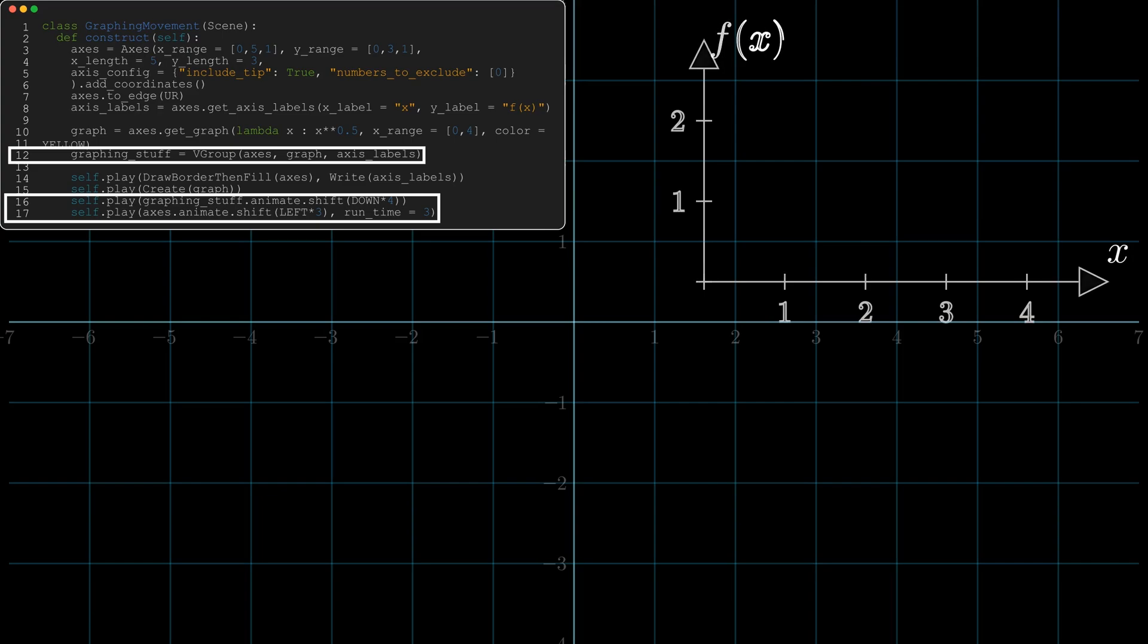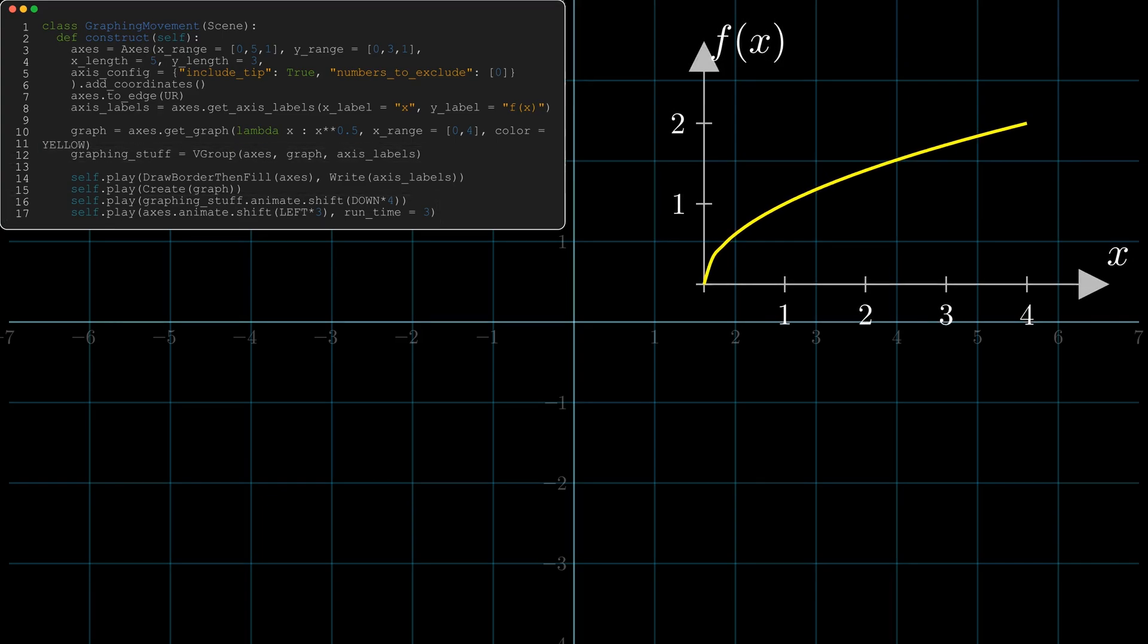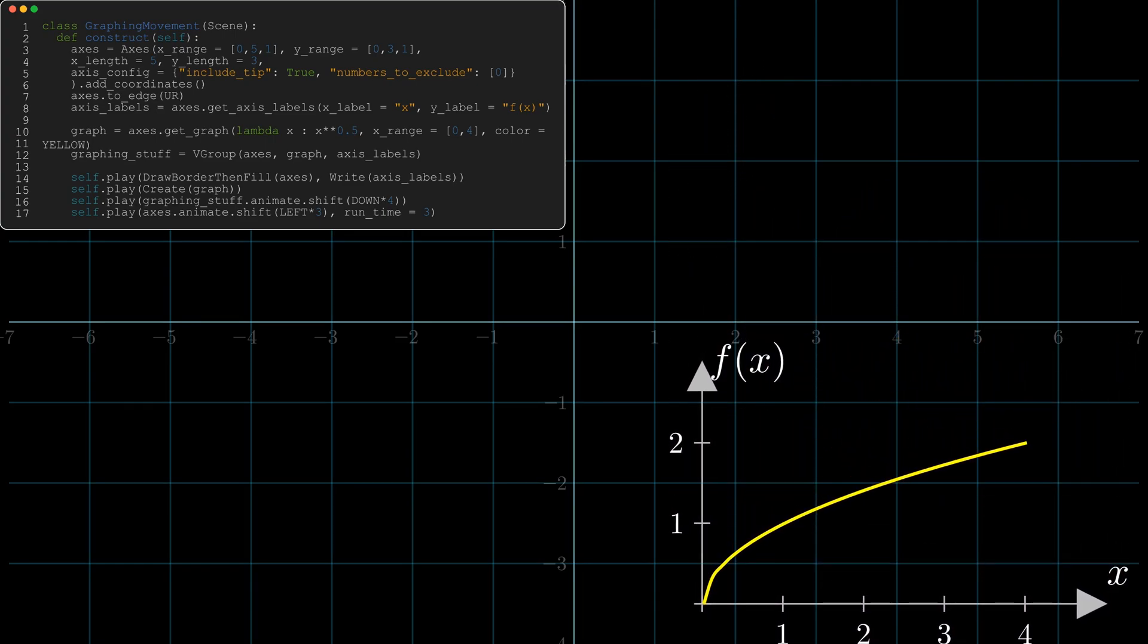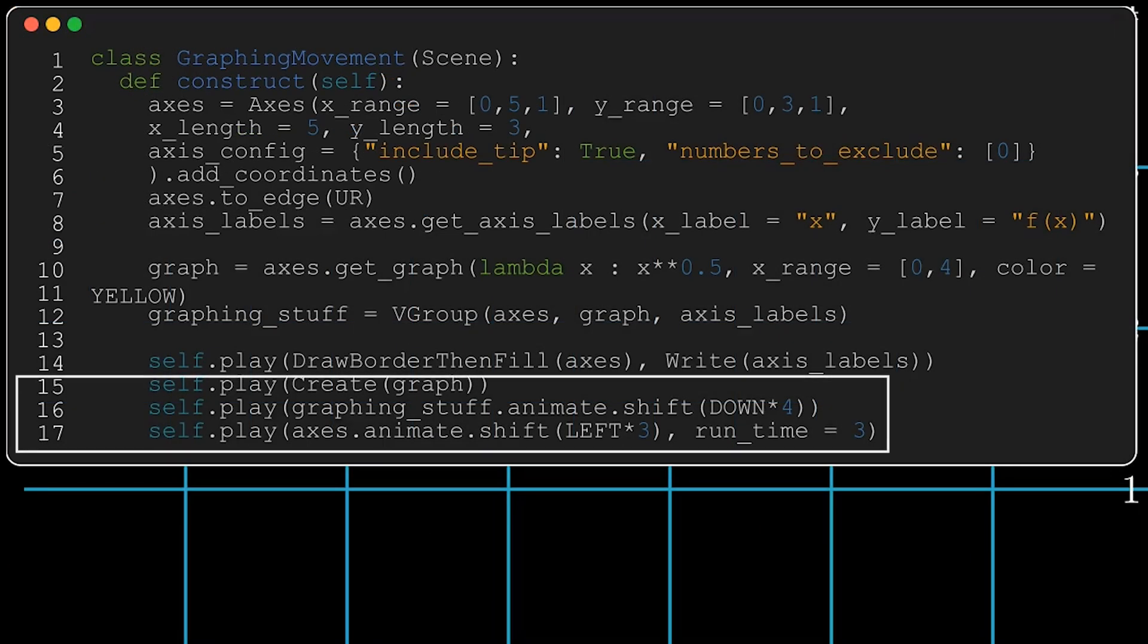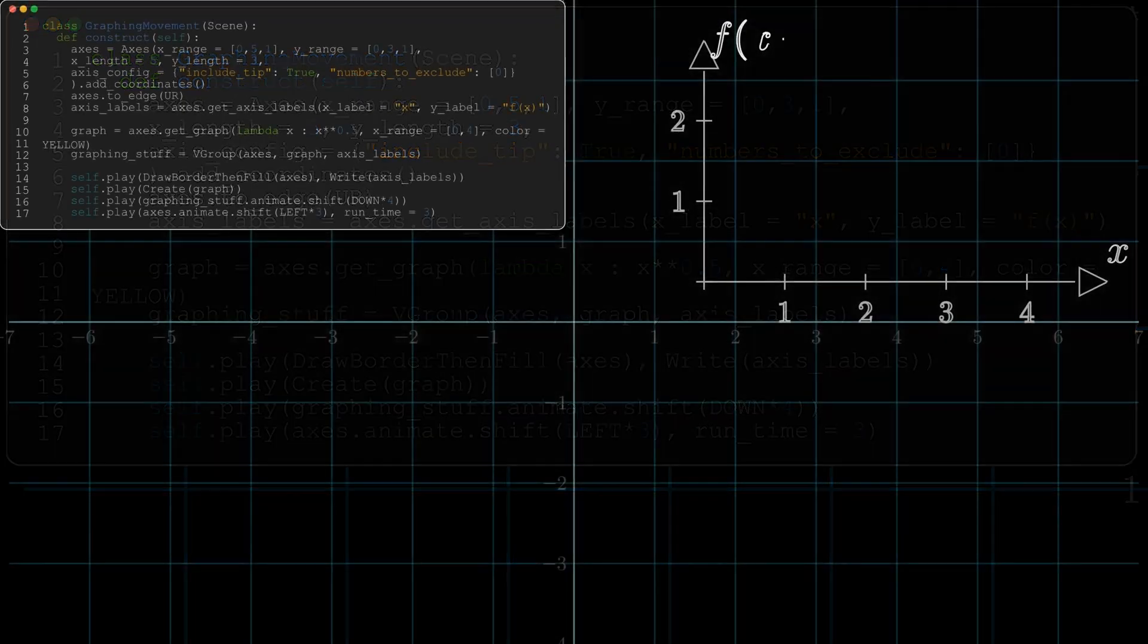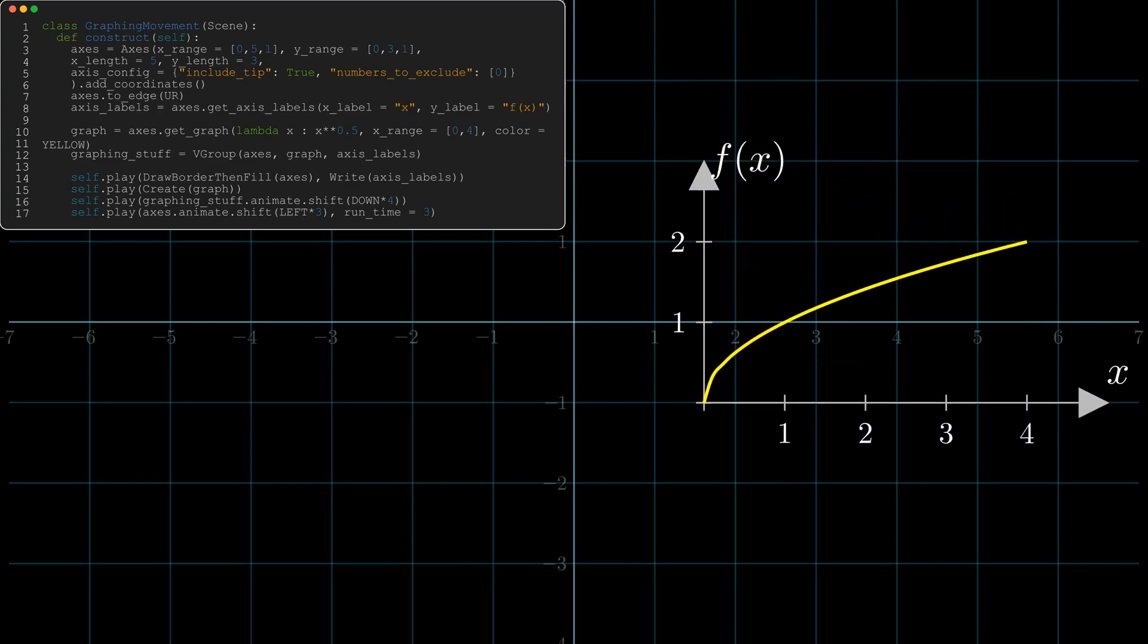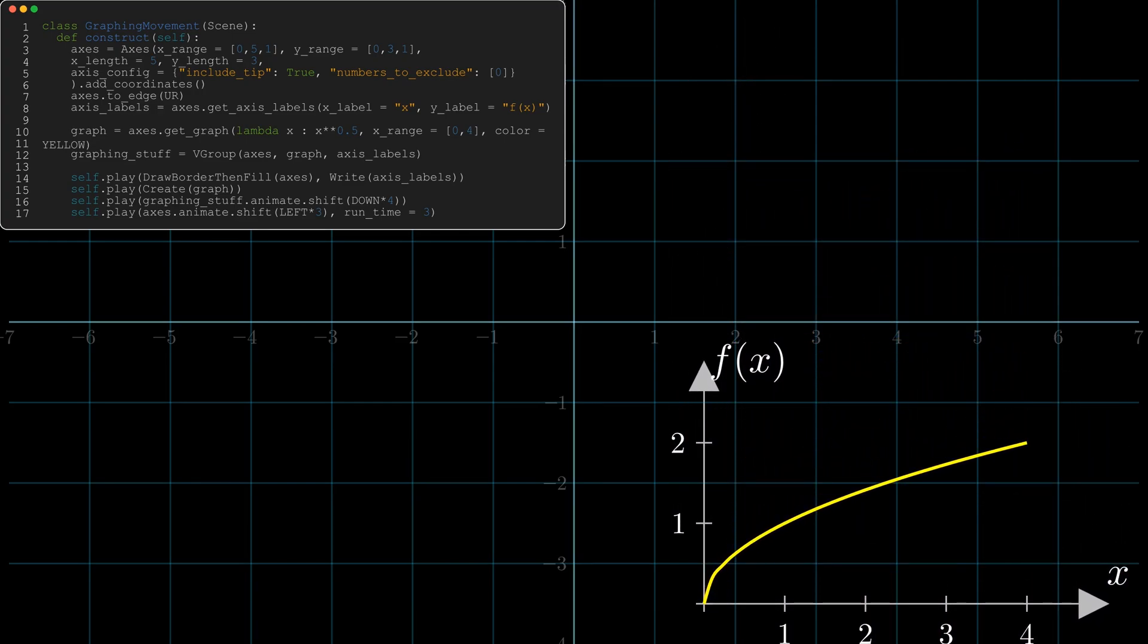You'll also notice I've created a group and I'm going to be moving the group and then only moving the axis, just to show you that if you want to shift everything around, then you've got to create a vector group. I've created a vector group, I'm creating the axis and the graph, and then I'm moving the vector group, which is all of the stuff I've got, and then I'm moving the axis, which is MANIM doing exactly what it should do. But if you don't understand why it's doing that, you're going to get a headache.